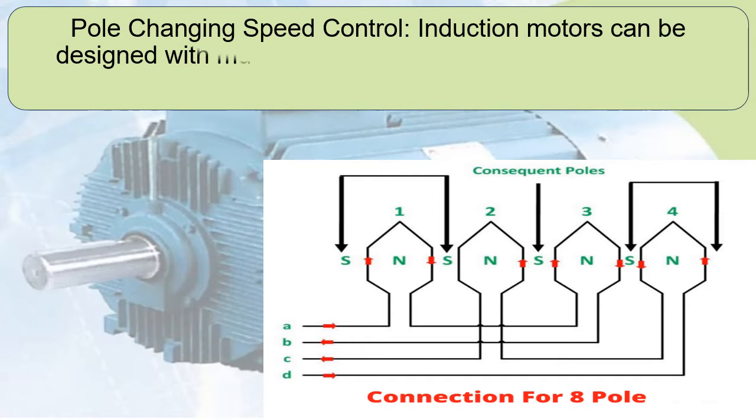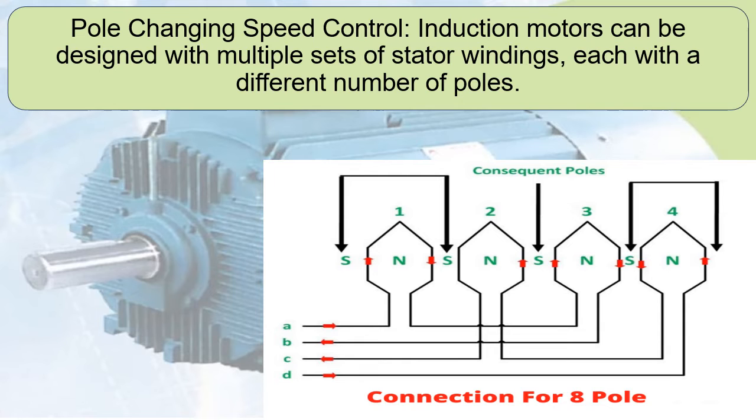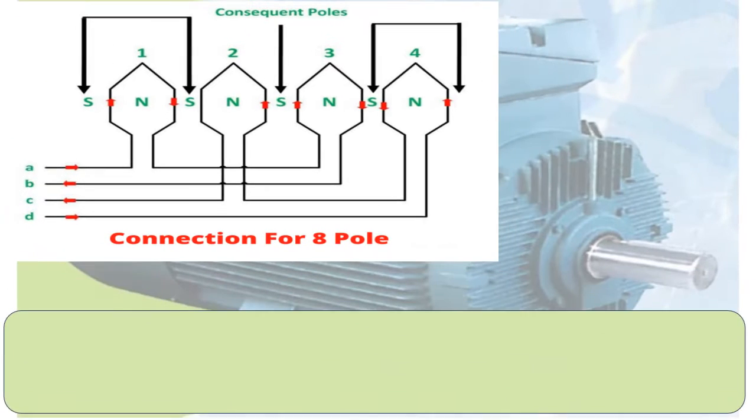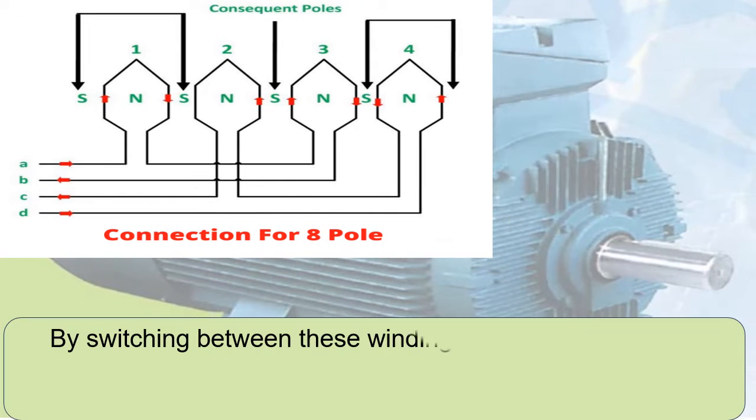Pole Changing Speed Control: Induction motors can be designed with multiple sets of stator windings, each with a different number of poles. By switching between these windings, you can change the motor's speed. This method is common in applications where you need discrete speed levels.